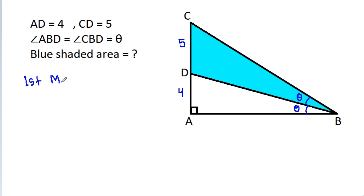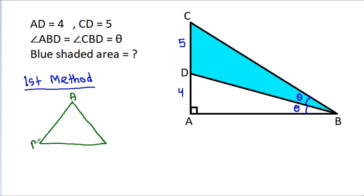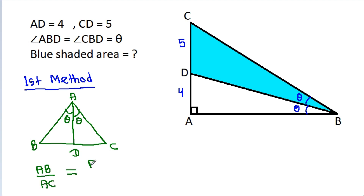First method: in any triangle ABC, if BD is the angle bisector, then AB by AC will be equal to BD by CD.